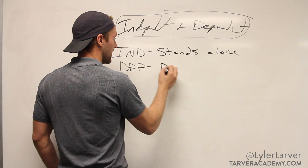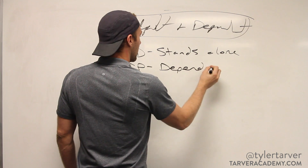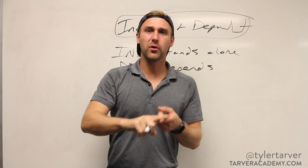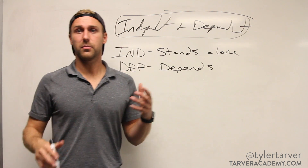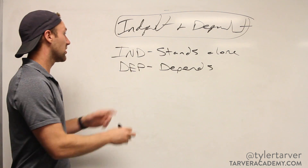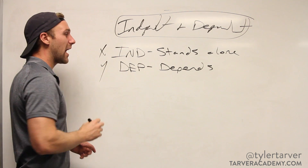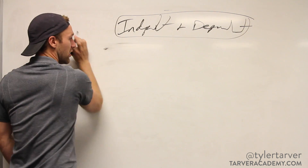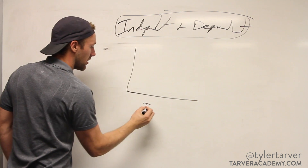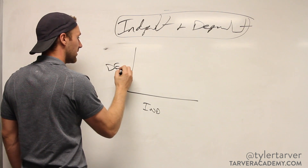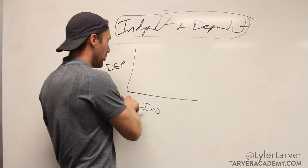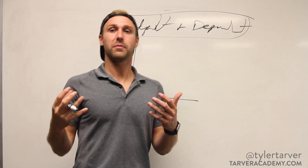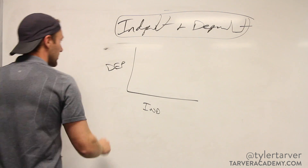The independent variable can be called a lot of things — it can be called your input, and the dependent is called your output. The independent is also your x, and dependent is your y. Whenever you're drawing a graph, your independent goes on the bottom and your dependent goes on the side, because you control the independent and the dependent fluctuates based on whatever your independent value is.